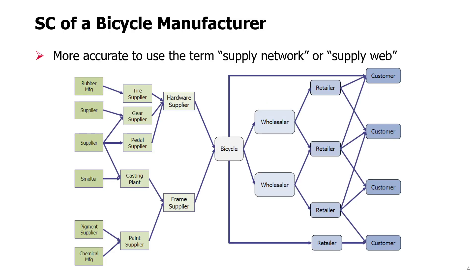A supply chain might be more accurately called a supply network or supply web, but 'chain' is what is usually used despite that. What you see here in this slide is a supply chain of a bicycle manufacturer, where the bicycle manufacturer is in the middle. To deliver to customers, the company might use wholesalers, who then sell the product to retailers where the customer can purchase it. Sometimes the manufacturer sells directly to larger retailers, or even uses a direct sales model. On the other side, there are suppliers of the manufacturer, and those suppliers have their own suppliers — the network may have multiple stages or tiers.